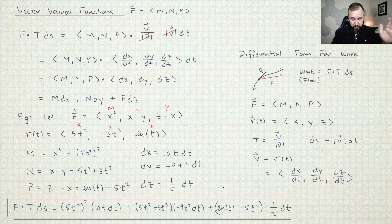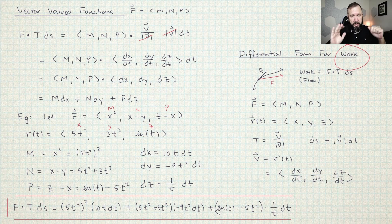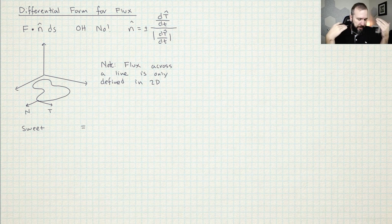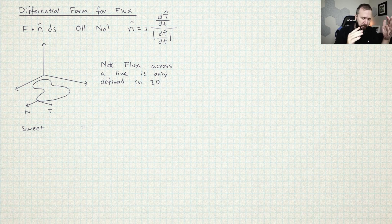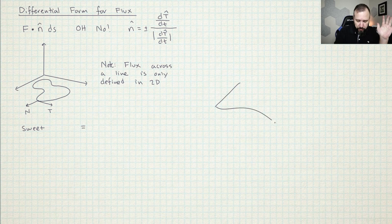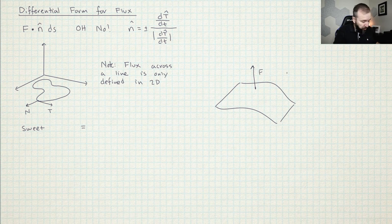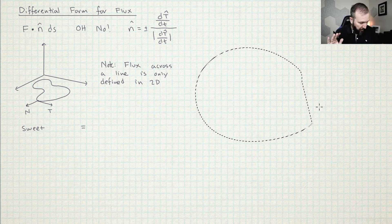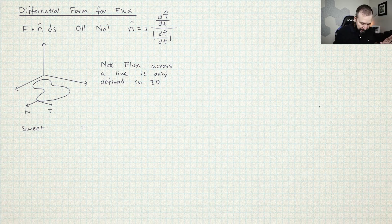Differential forms are what you need. Now I need to do the differential form for flux. I am deriving the differential forms for line integrals. Flux across a line only makes sense in 2D — if you want to talk about flux in 3D, then you have to do flux through a surface, which I'll cover later. For right now, we're going to restrict ourselves to a 2D environment.